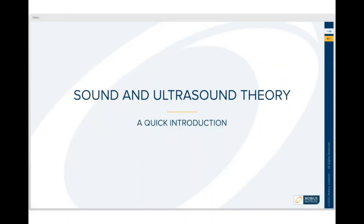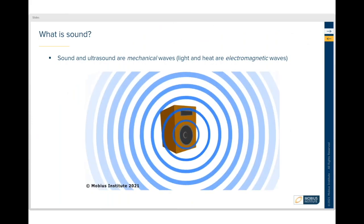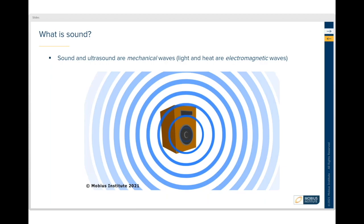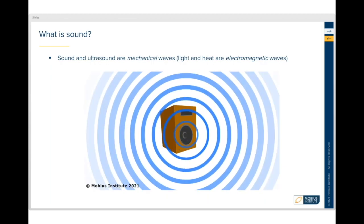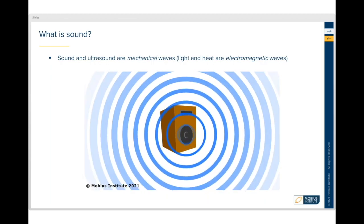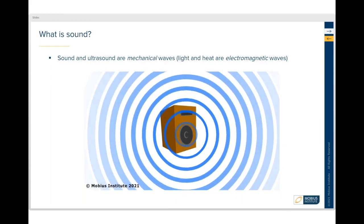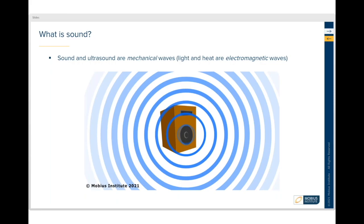So a little bit of theory. Ultrasound and sound are mechanical waves. Just as sound moves through the air but not through a vacuum, so does ultrasound. Light and heat are electromagnetic waves, so very different.